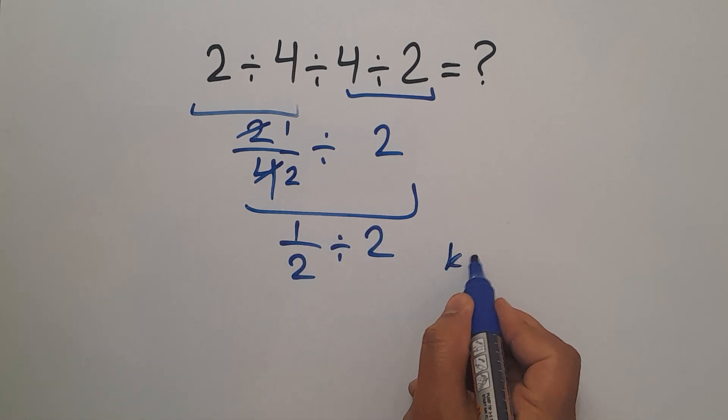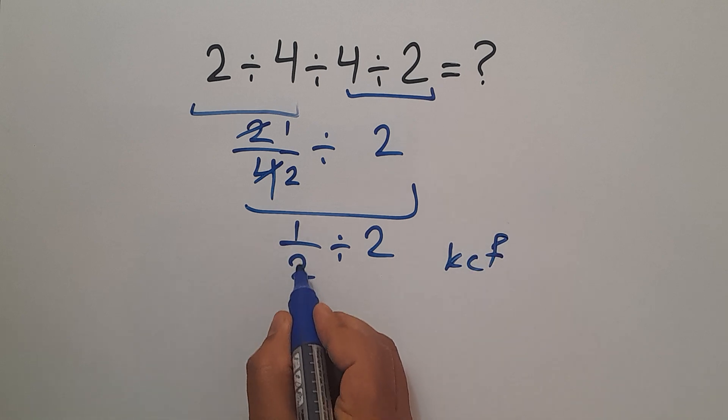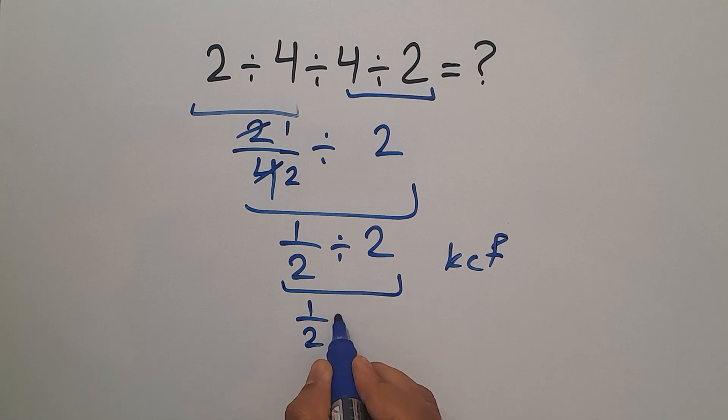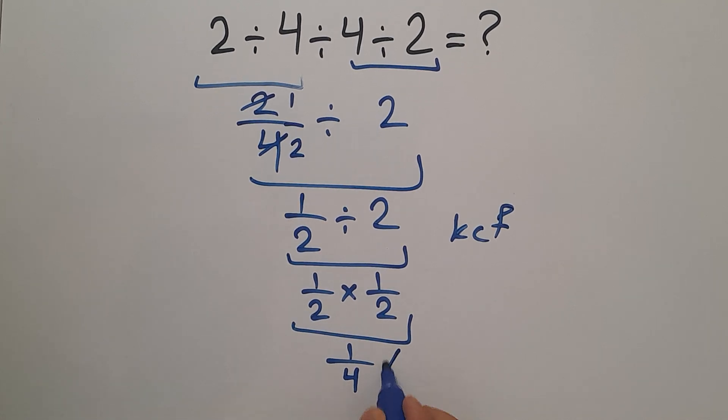According to the KCF rule, 1 over 2 divided by 2 can be written as 1 over 2 times 1 over 2, and this is equal to 1 over 2 times 2 equals 4. But this answer is not correct.